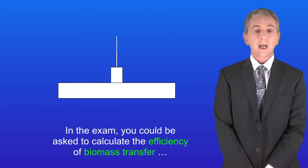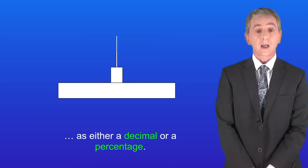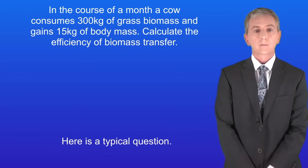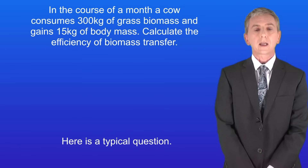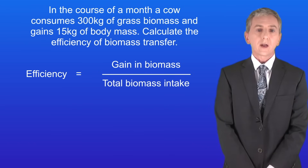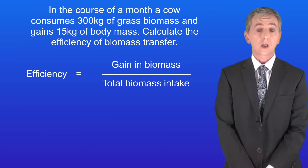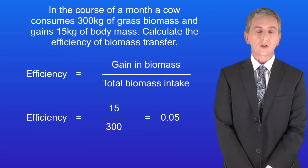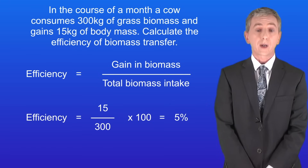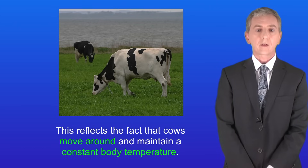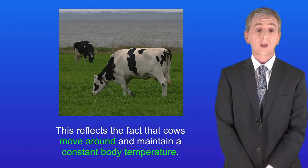In the exam you could be asked to calculate the efficiency of biomass transfer as either a decimal or a percentage. Here's a typical question: in the course of a month, a cow consumes 300 kilograms of grass biomass and gains 15 kilograms of body mass. Calculate the efficiency of biomass transfer. To answer this we use the equation: efficiency equals gain in biomass divided by total biomass intake. Putting the numbers in gives an efficiency of 0.05. To convert to a percentage, multiply by 100, giving a percentage efficiency of 5%. This reflects the fact that cows move around and maintain a constant body temperature.